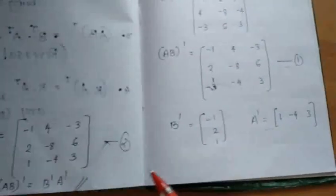Now check: (AB) transpose gives [-1, 4, -3; 2, -8, 6; 1, -4, 3] and B transpose A transpose also gives [-1, 4, -3; 2, -8, 6; 1, -4, 3]. Both equation one and equation two are equal. So we have verified that (AB) transpose is equal to B transpose A transpose. The key idea of a transpose is to interchange the rows and columns of a given matrix. Hope you understood. Thank you for watching.